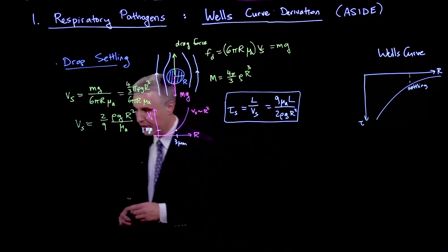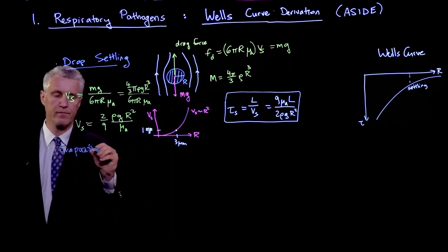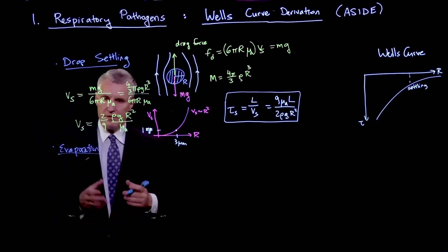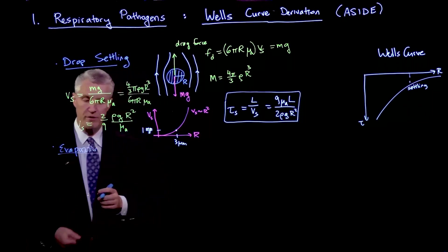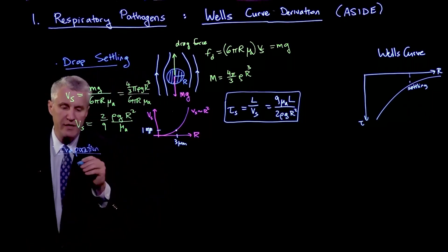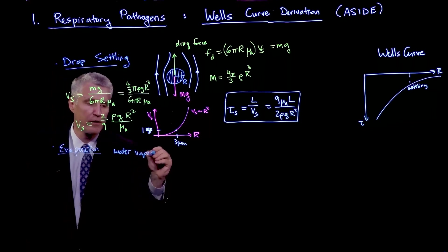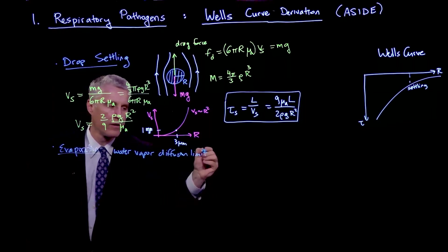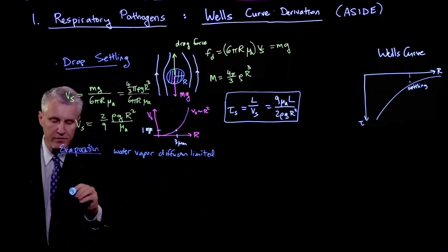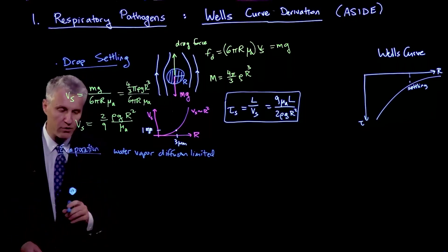These droplets are getting very small as they're evaporating, and it's happening very quickly, as we shall show in a moment. A natural assumption is that the process is limited by the diffusion of water vapor away from the droplet. We have a little droplet here with a certain size r, which is now going to be varying with time, so it has a radius r(t).